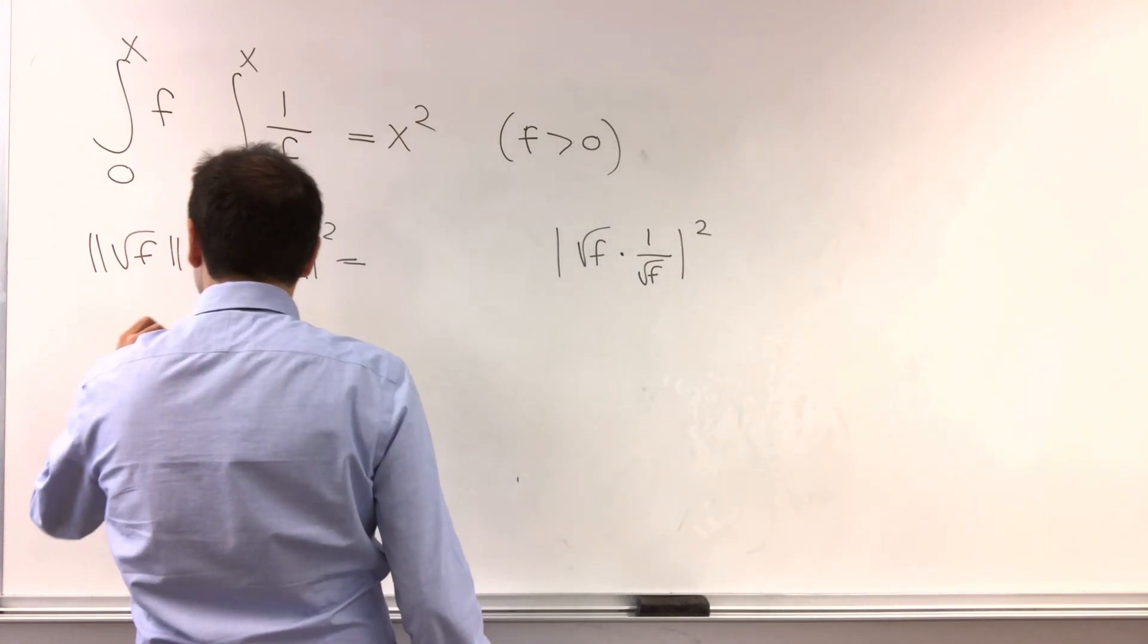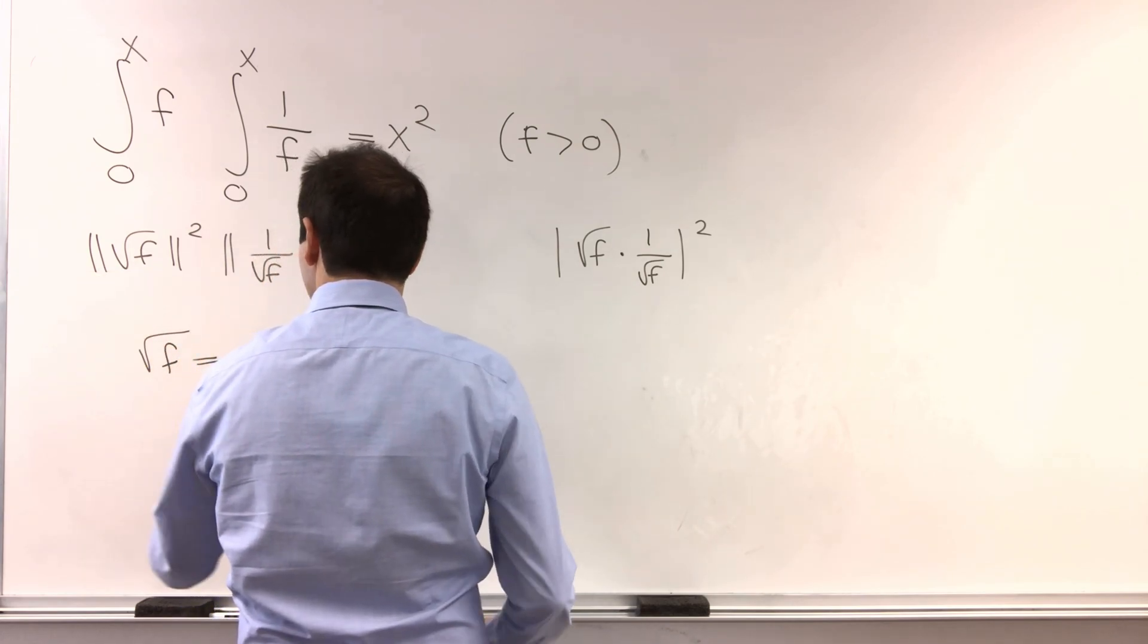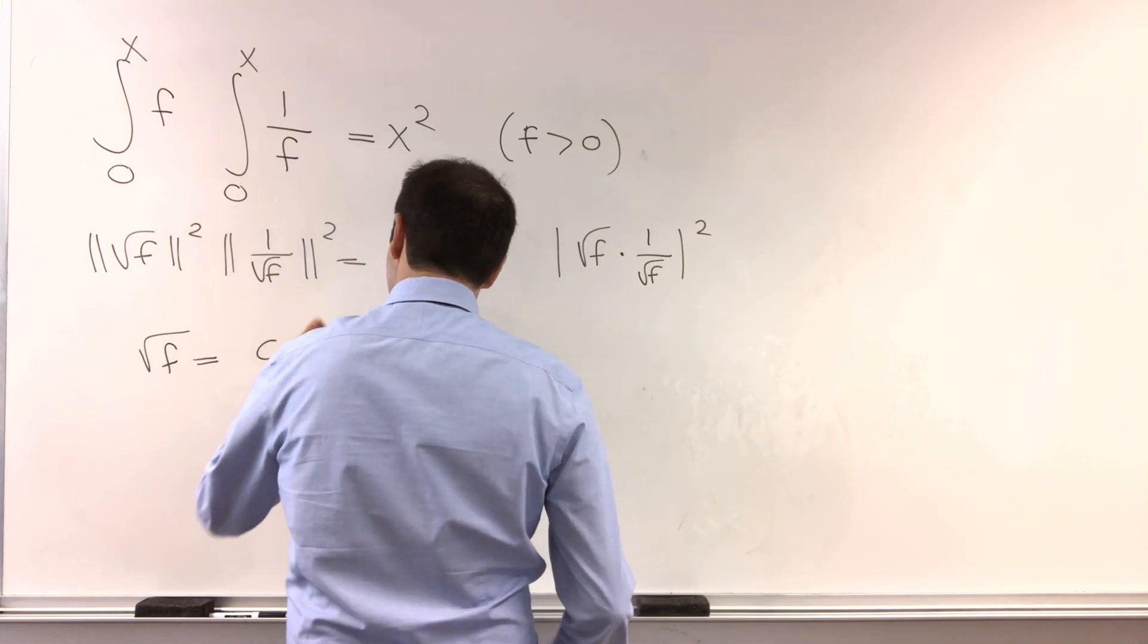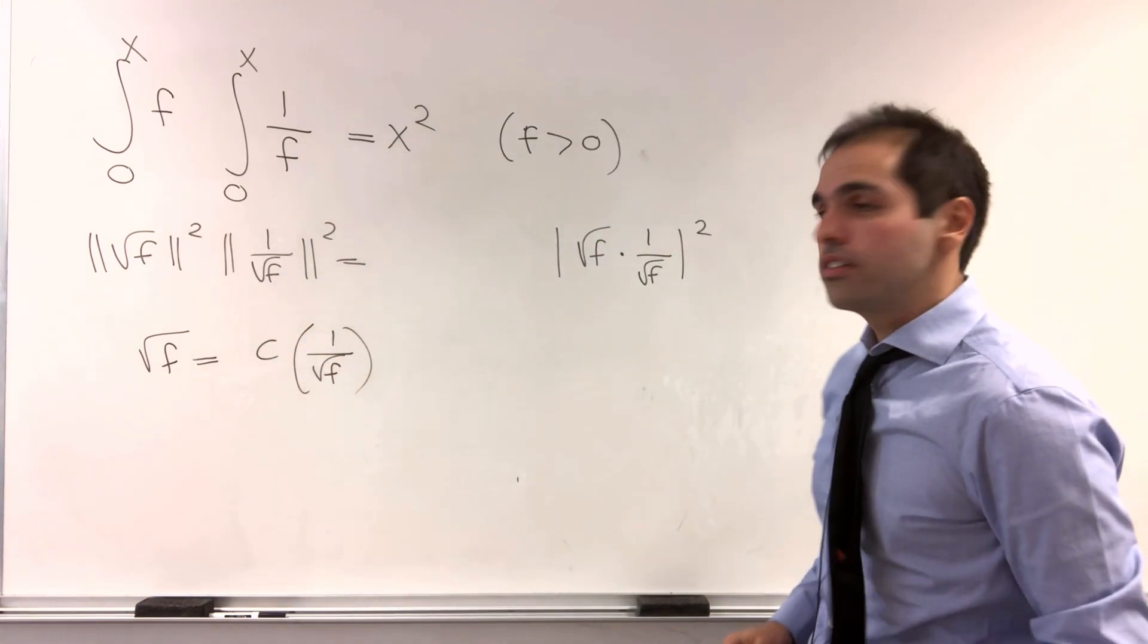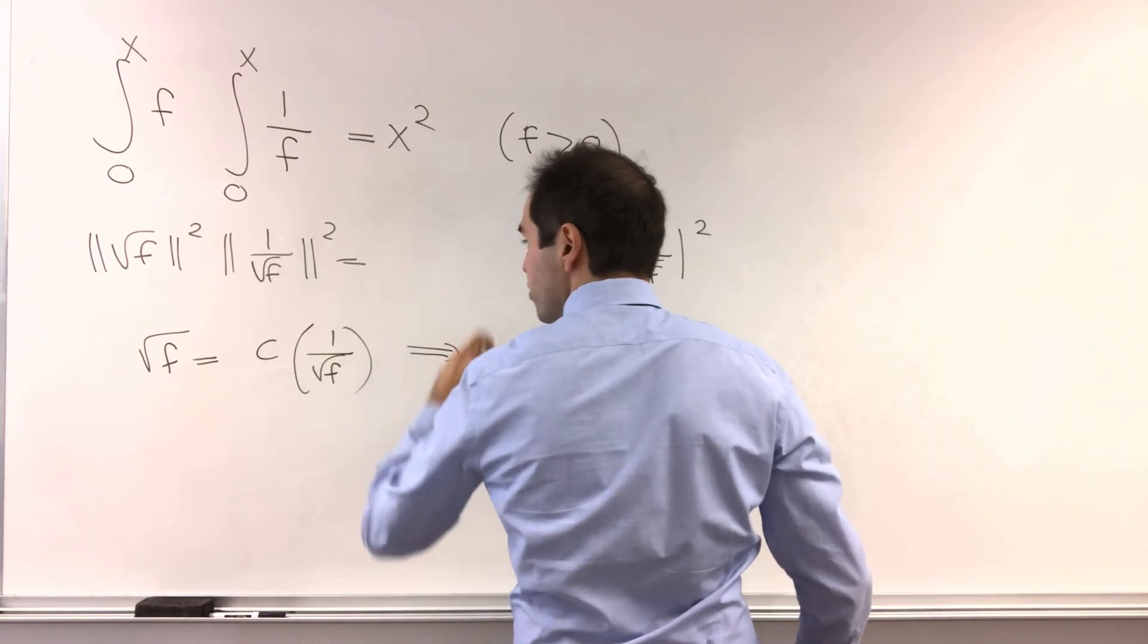So our grand conclusion is, well, we have square root of f is just a constant times 1 over square root of f. The other way around, but it's the same thing because f is strictly positive.